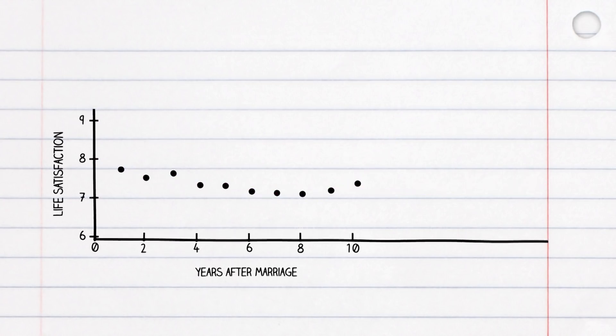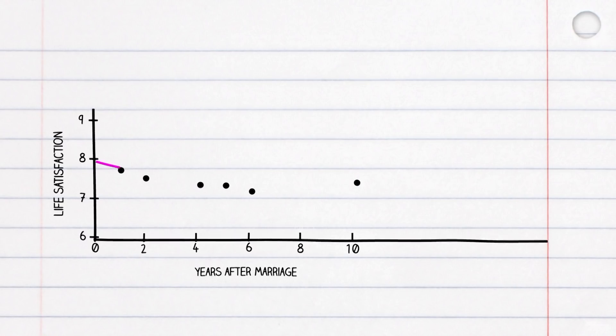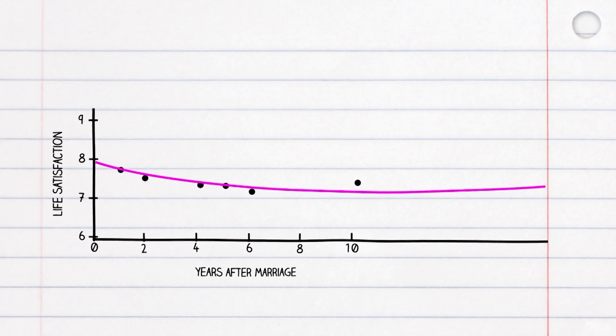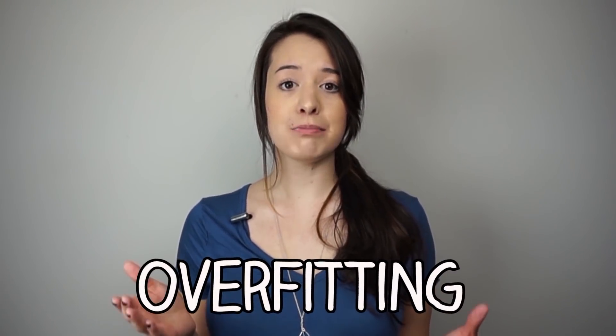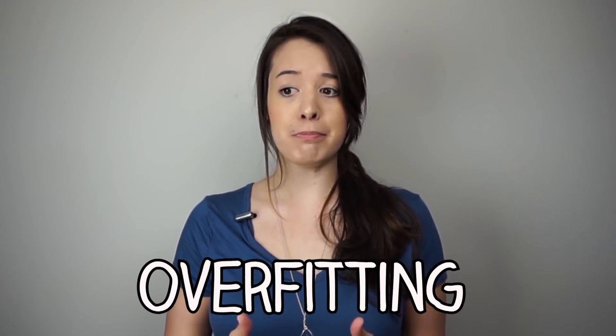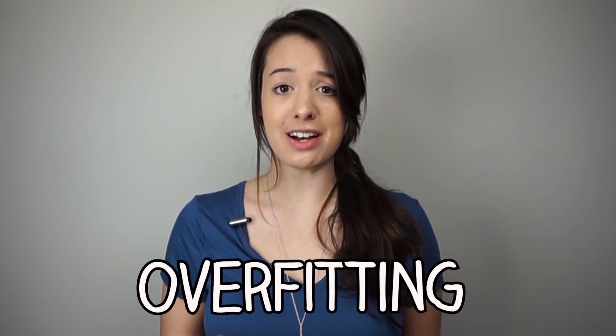In practice, obscuring data, adding random noise, or withholding information often makes for better predictions. By placing too much emphasis on each individual data point, we lose sight of what's really important — the trend. This idea is called overfitting, and it tells us that sometimes the less we think, the better off we are.